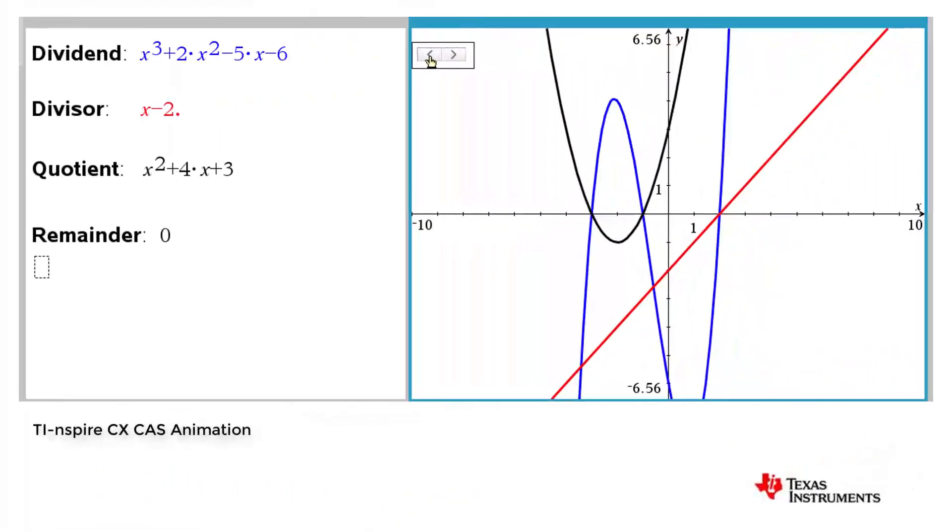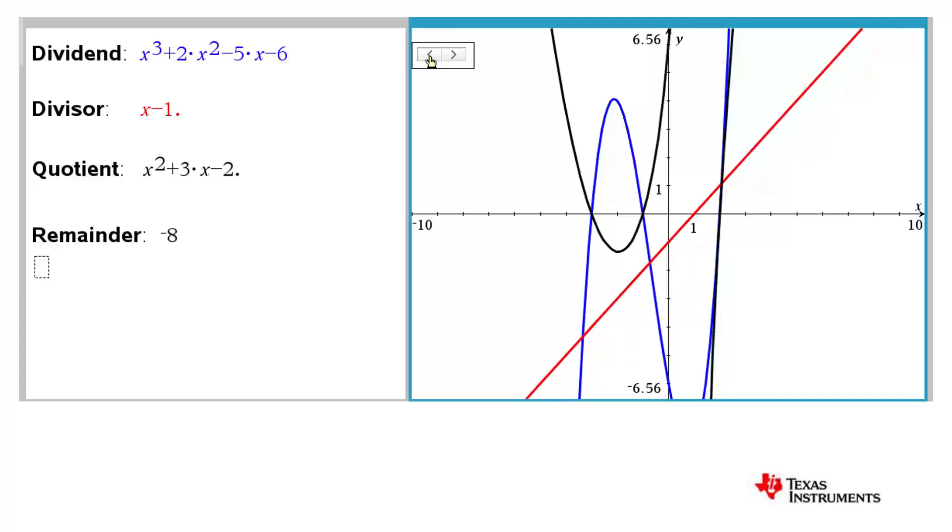We could have used our graphical representation to find each of the factors, corresponding quotient and remainder. Check out this animation and algebraic connection.